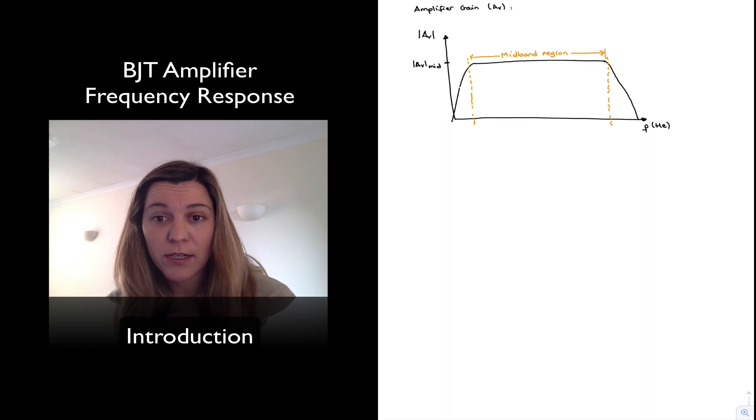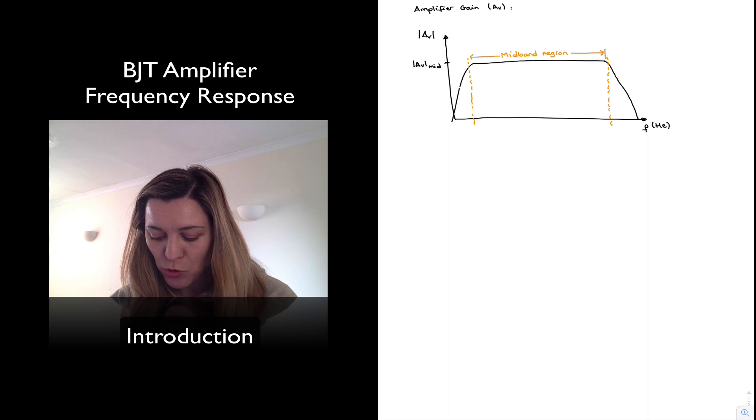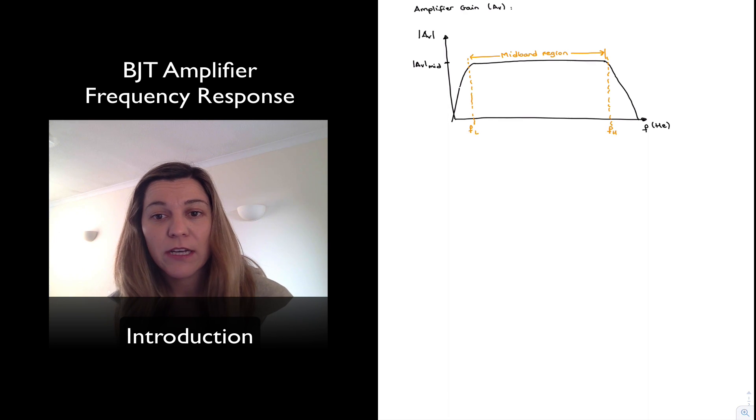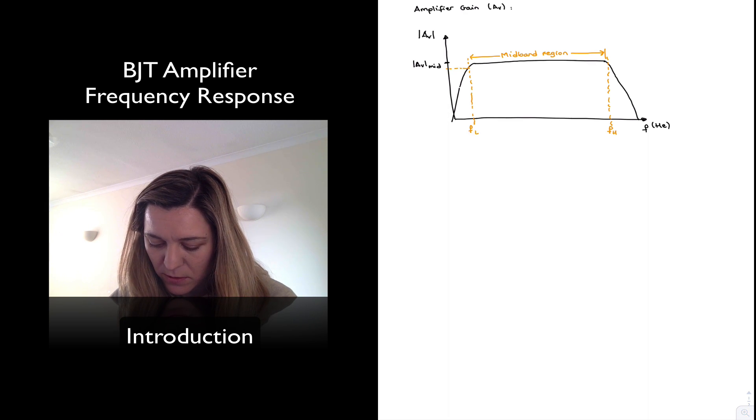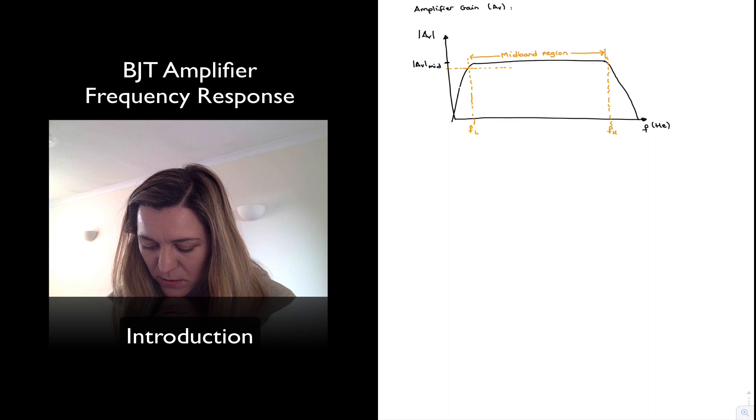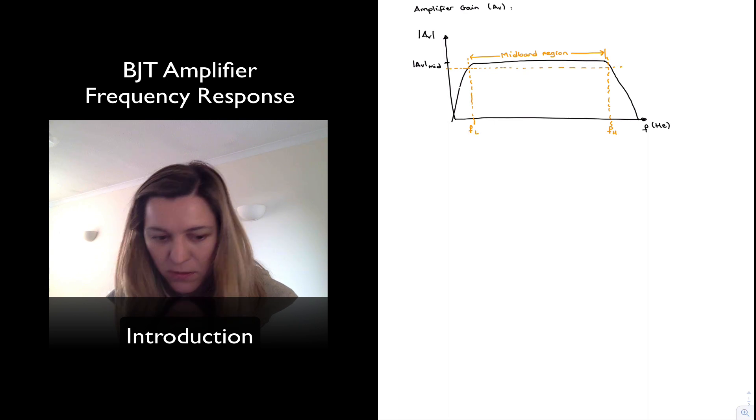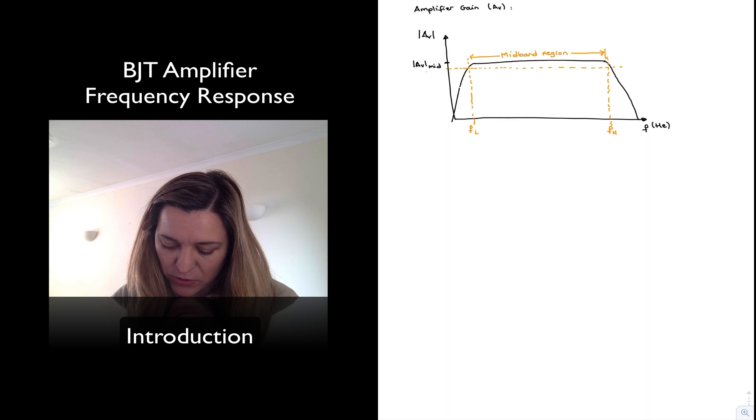And of course, we want to provide the definition for where does this mid-band region begin and end. And by definition, we're going to assume that there is a low cutoff frequency and a high cutoff frequency for this amplifier that are defined as the points at which the mid-band gain falls three decibels below the mid-band region or the maximum value. And so this will be basically the minus three dB points.